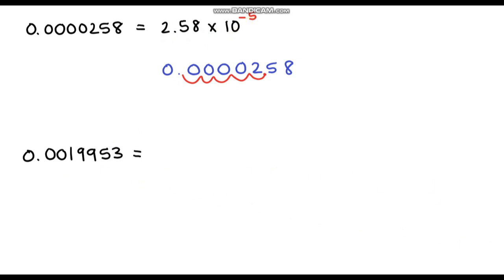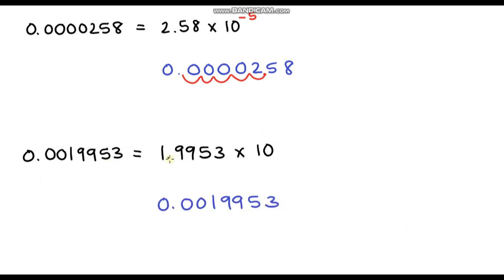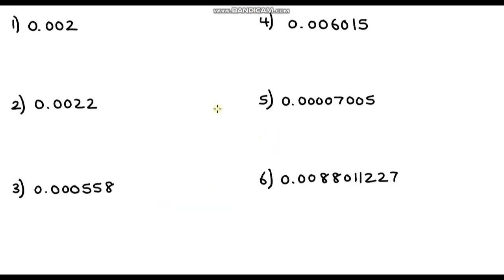For the next one, our base number is going to be 1.9953. As always, we multiply by 10. To find the power, I'll copy out the original number. The decimal point is between the one and the nine, so that's where we're starting. We need to move it to this point here — one, two, three places backwards — so our power is going to be negative three.